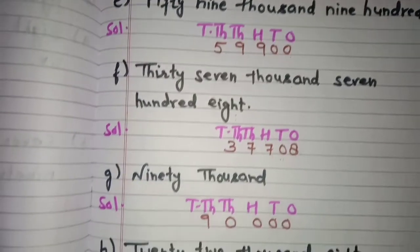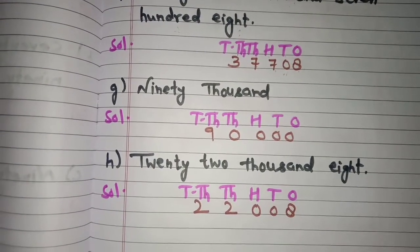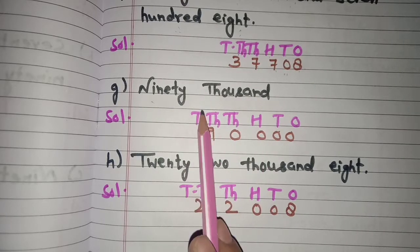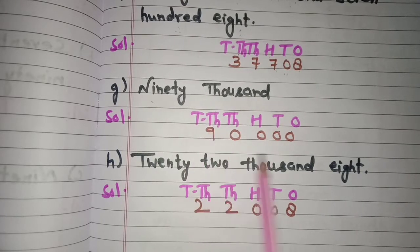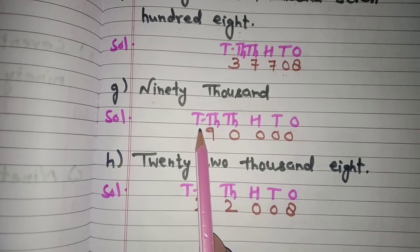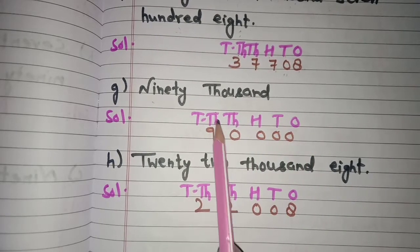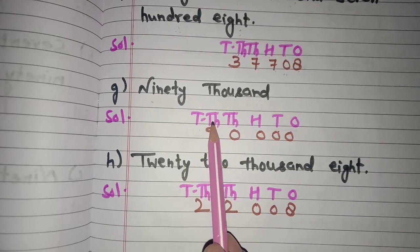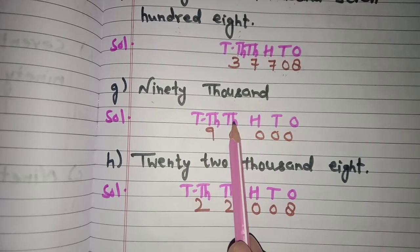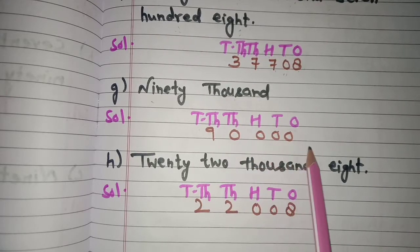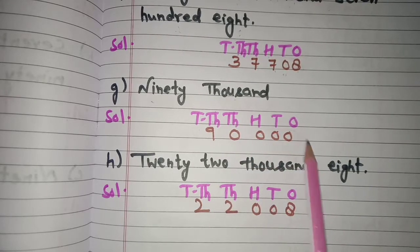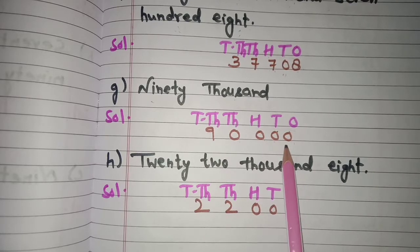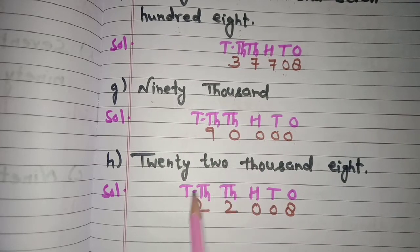Now next part g: 90,000 means up to ten thousands, so we mention the places up to ten thousands. Then 9 at ten thousands and 0 at thousands, and then we put all zeros. The figure is 90,000.